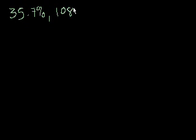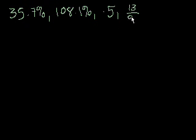So let's see. The first set of numbers that we have to order is 35.7%, 108.1%, 0.5, 13 over 93, and 1 and 7/68. So let's do this problem.